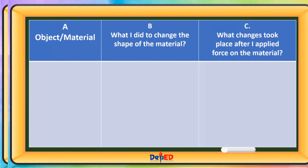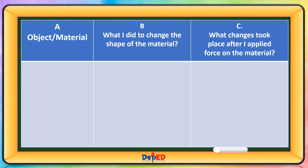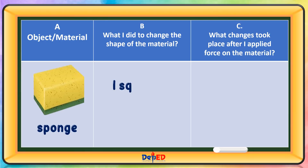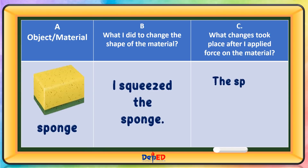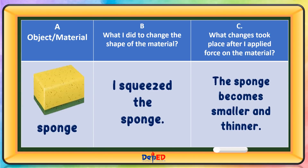Object and material: Sponge. What I did to change the shape of the material? I squeezed the sponge. What changes took place after applying the force? The sponge becomes smaller and thinner.